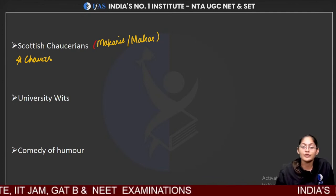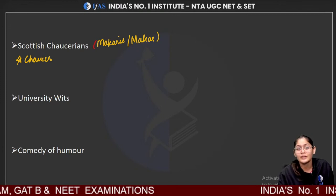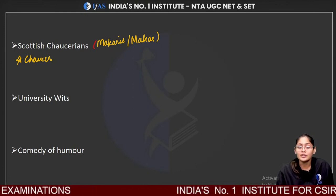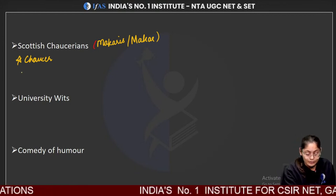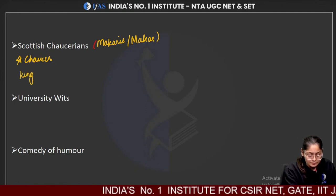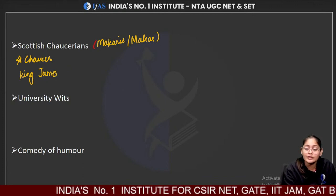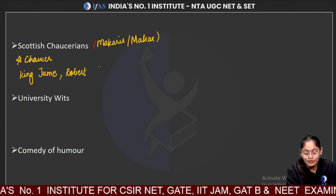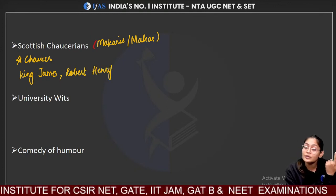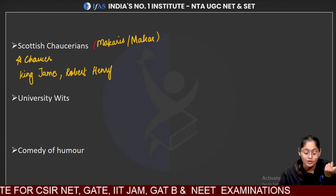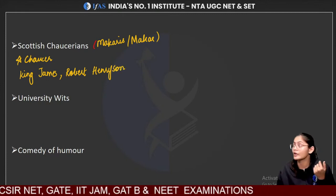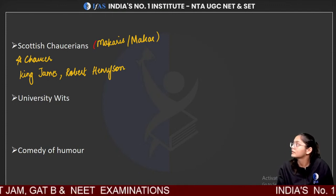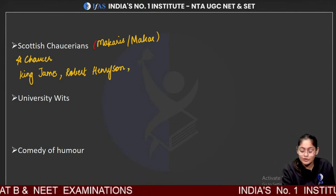These Scottish poets were writing under the influence of Chaucer and his contemporaries like Lydgate. They were also using the Chaucerian stanza — the seven-line stanza which we also famously call the Rhyme Royale stanza. The important writers under this group include King James, who has written King's Quair in Rhyme Royale, and Robert Henryson, who is famous for continuing Chaucer's unfinished work Troilus and Criseyde.